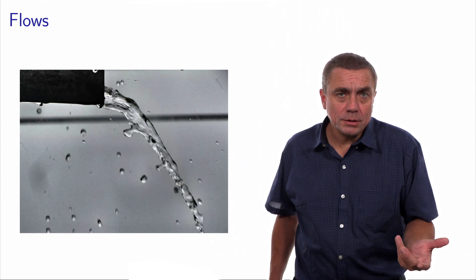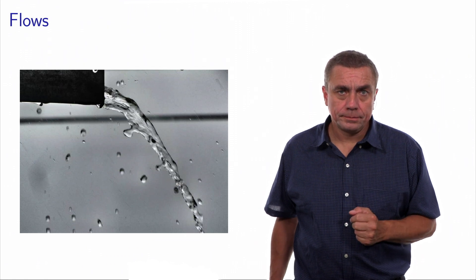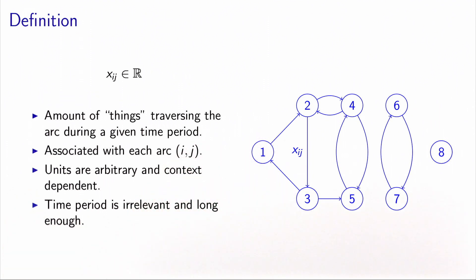The first quantity that we will associate with arcs is the concept of flows. The definition of a flow is a real quantity that we will denote by x associated with arc ij. We will denote x with subscripts i and j to refer to the flow on arc ij. This quantity will be associated with arcs and will model the amount of things traversing the arc during a given time period.